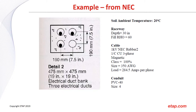The exercise we'll start with is an example from NEC — Detail Number 2, essentially a 2×2 configuration. We'll go over how to enter all the different dimensions: spacing between conduits, dimensions for the raceway, depth, thermal soil resistivity, cable characteristics, and conduit characteristics — which is PVC conduit size 4. We'll use the wizard to enter this information quickly.